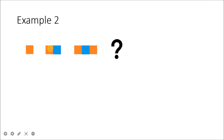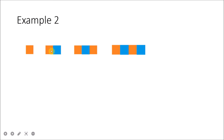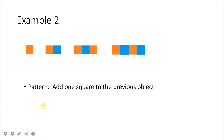In the next example, we start with 1 square, then add another square each time. So the fourth object has 4 squares, and the fifth object would have 5 squares. The pattern is adding 1 square to the previous object.